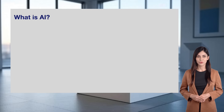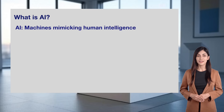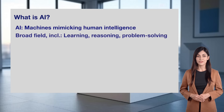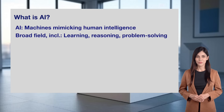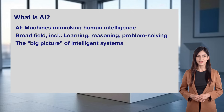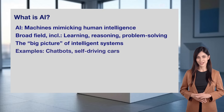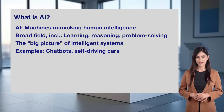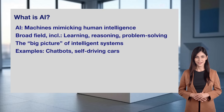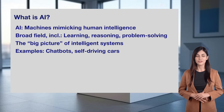Let's start with AI, which we touched on in Day 1. Artificial intelligence, or AI, is when machines mimic human intelligence. It's a broad field that includes abilities like learning, reasoning, and problem-solving. Think of AI as the big picture of intelligent systems, covering everything from chatbots like me to self-driving cars. AI is the overarching goal of creating machines that can think and act like humans, encompassing many techniques, including the ones we'll talk about today.